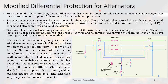Next is the modified differential protection for alternators. This scheme overcomes the problem of detecting small earth faults. The modified scheme has two elements: one arrangement uses a resistor connected to a phase fault detector. The phase elements are connected in star along with the resistance, and the earth fault relay is kept between the star point and neutral. Under normal operating conditions, the currents at the two ends of each stator winding are equal, so balanced circulating current flows.